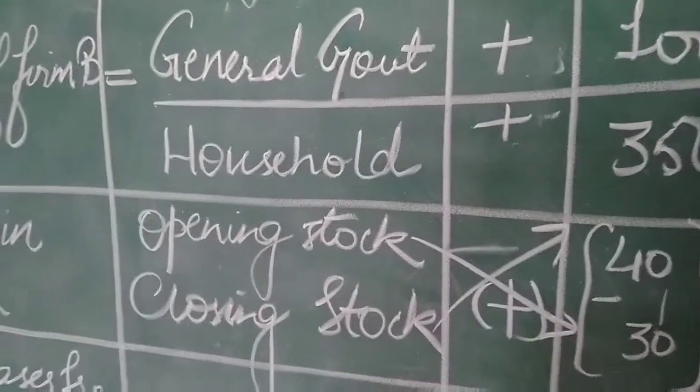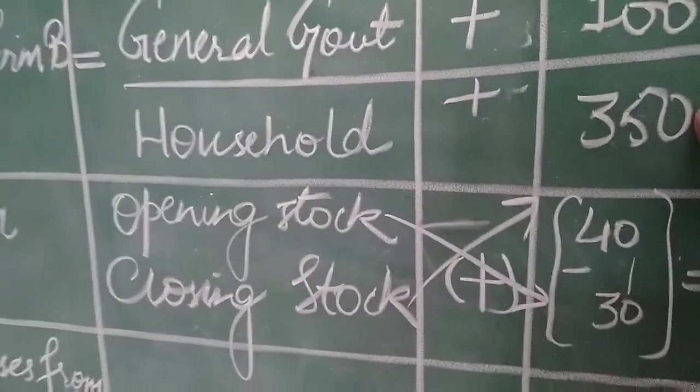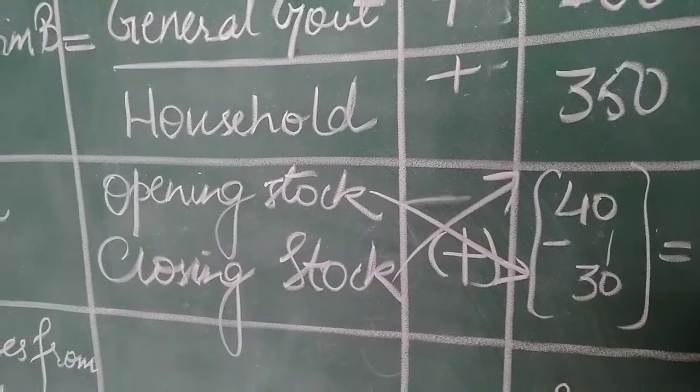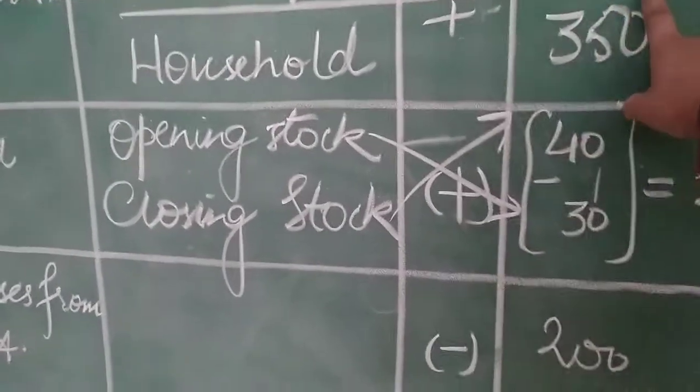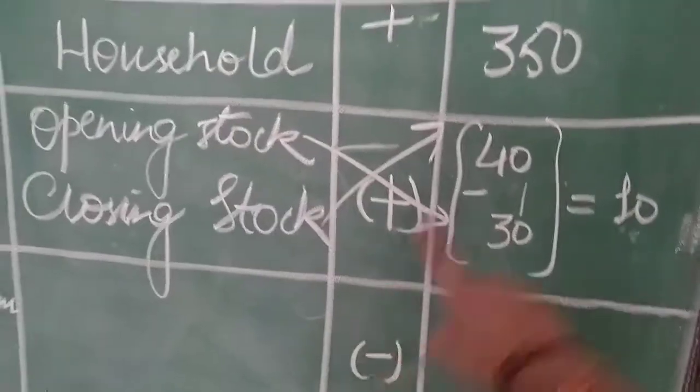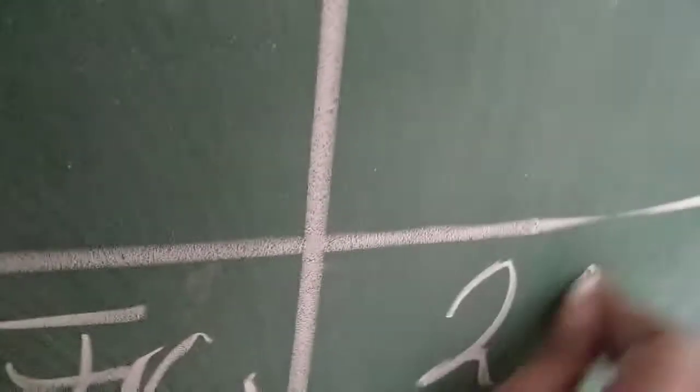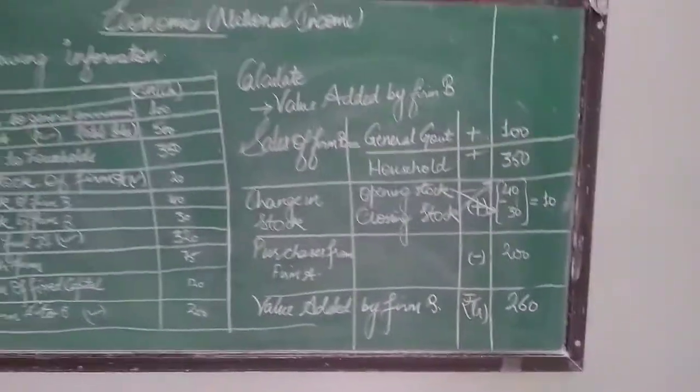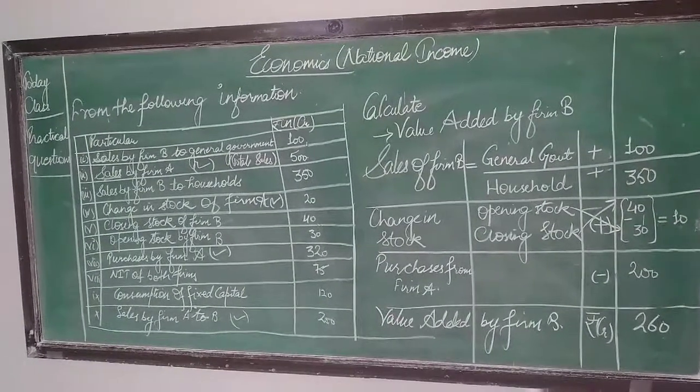100 plus 450 that makes 550, then plus 10 that's 560, minus 300 gives us 260. So 260 is the ultimate solution to gross value added by firm B.